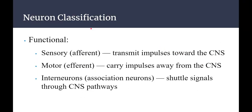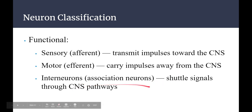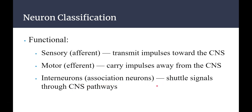There's also a functional classification of neurons. Sensory or afferent neurons transmit impulses toward the CNS — toward your brain. Motor or efferent neurons carry impulses away from the central nervous system. A third type is interneurons, also known as association neurons, which shuttle signals through CNS pathways.